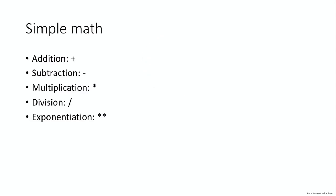So let's start really simple. Here are some of the operations that you can do — all the simple operations that you'd expect. Some of the symbols might look a little bit different than you would expect. Addition is the plus sign, subtraction is the minus sign, multiplication is an asterisk, and division is a slash.